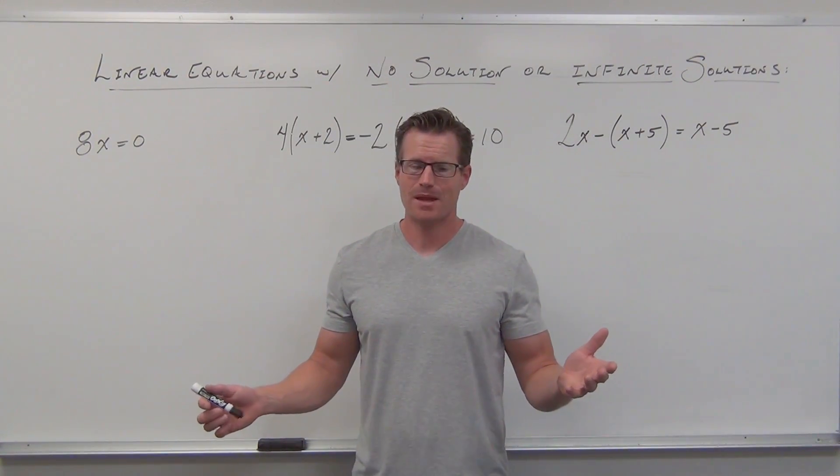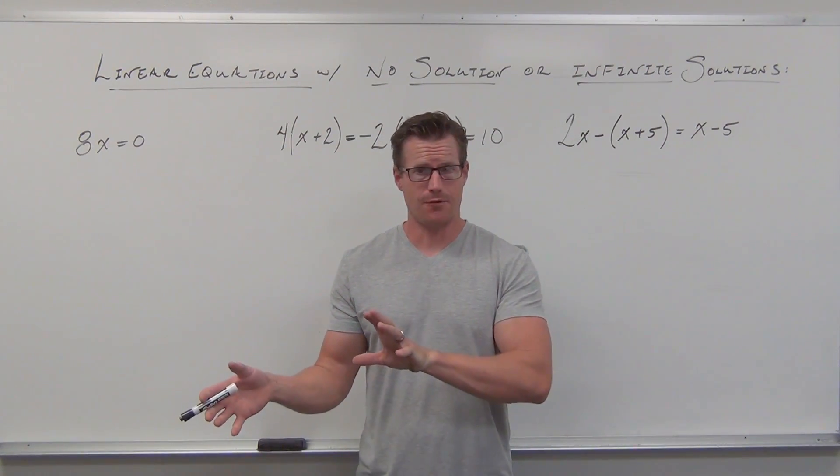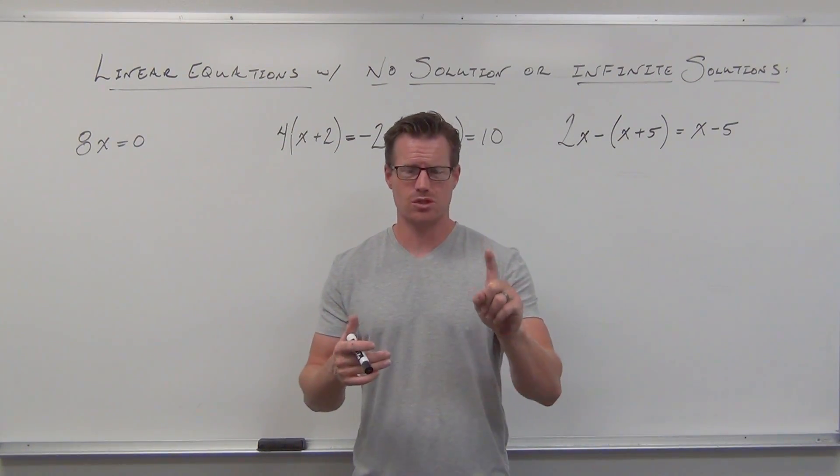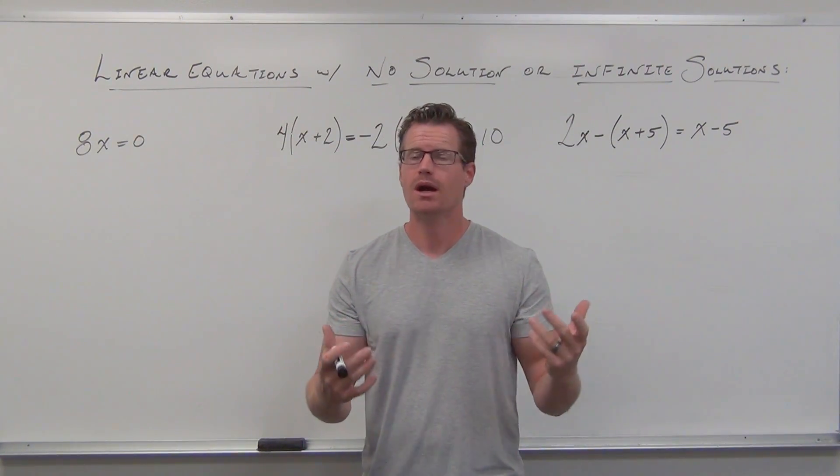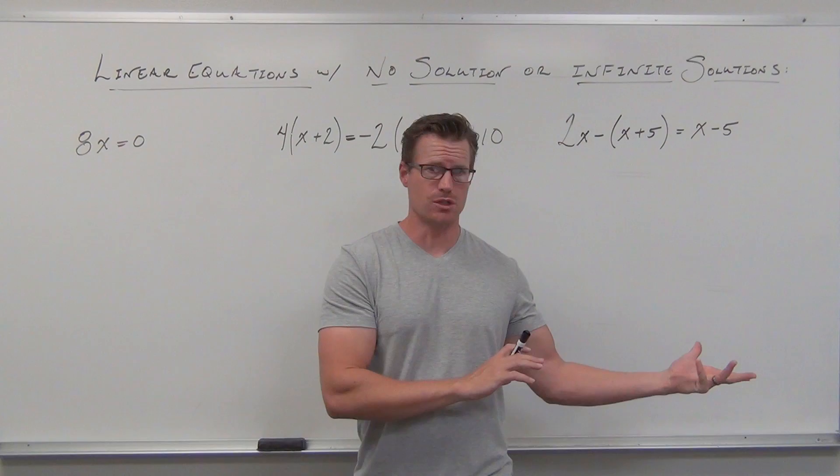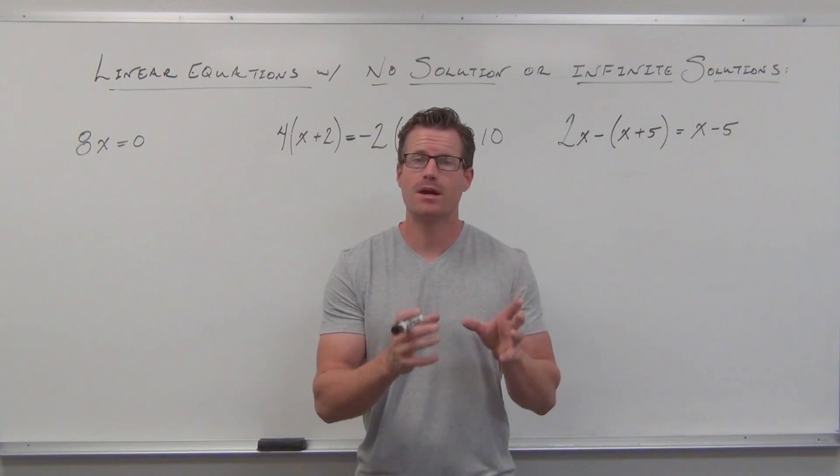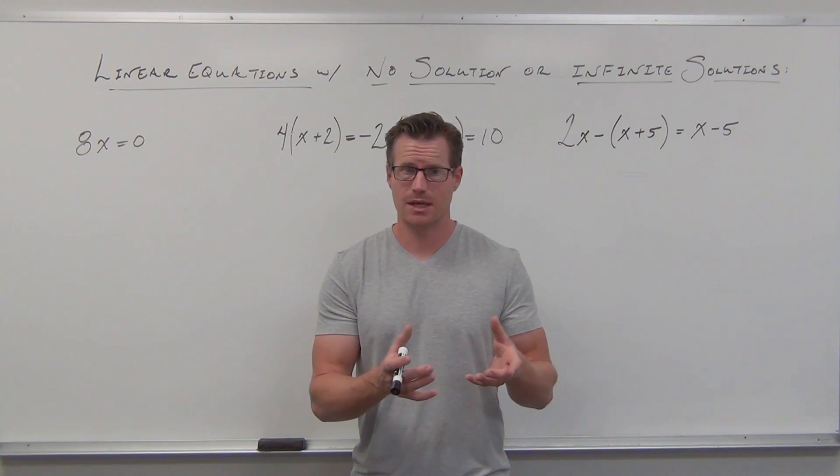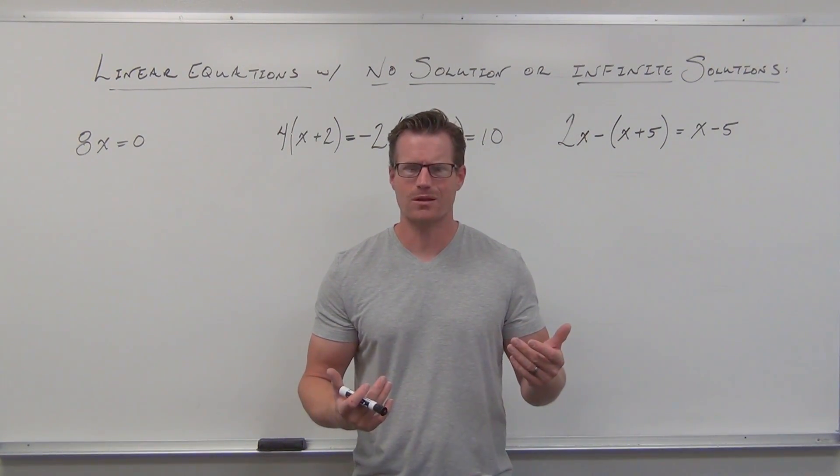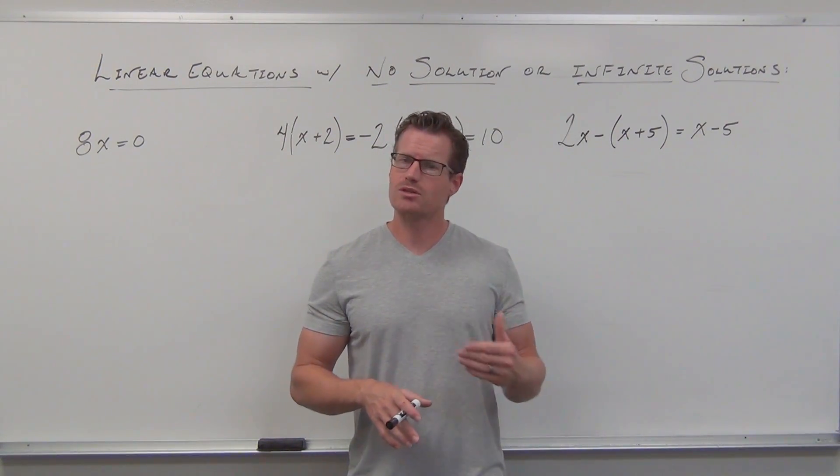We've got a special case now. When we first introduced linear equations, we talked about the three cases that you have. Almost all the time, you have these linear equations ending with exactly one solution, the one number that makes this equation true. But there are two other cases: cases when we have no solution and cases where we have infinite solutions. We're going to look at those two cases today because they look very similar if you're not really paying attention, and they look really weird. A lot of times students get stuck because they don't know how to interpret what's going on.